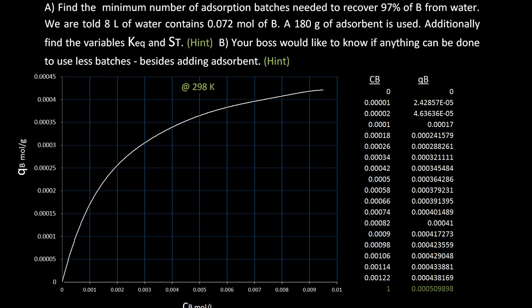This is a quick video on adsorption. In this video we need to find the minimum number of adsorption batches needed to remove 97% of B from water.